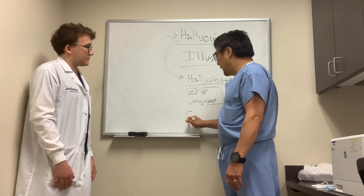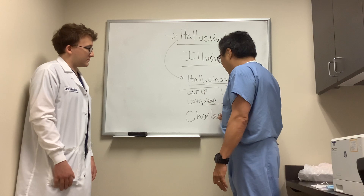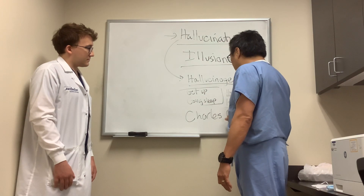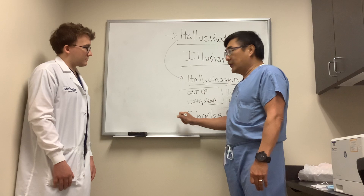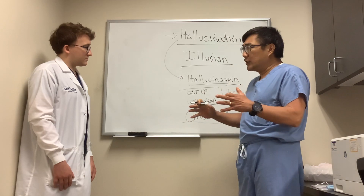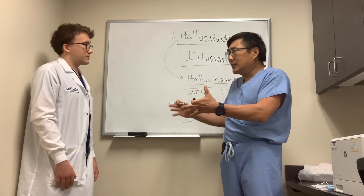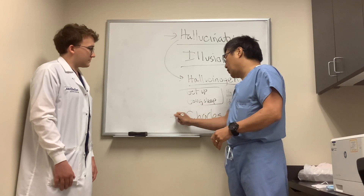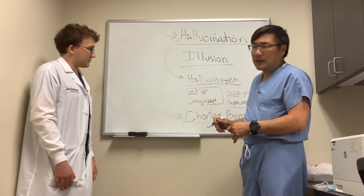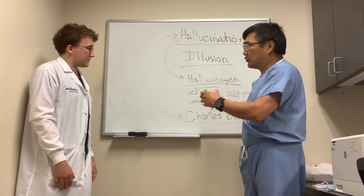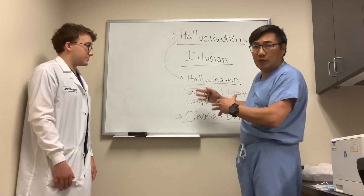There are also hallucinations that occur when you've been blinded. If you lose your vision, you might have the Charles Bonnet phenomenon. With loss of vision, there's a release of information from your occipital cortex, and that release hallucination is caused by vision loss. They're often formed hallucinations, meaning people might see people, dogs, or other formed figures.